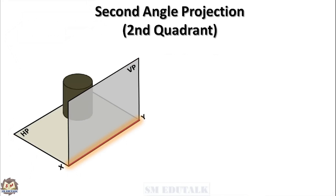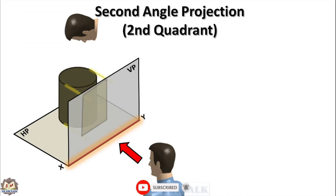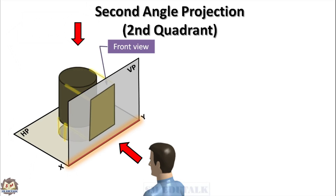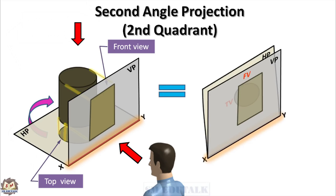In second angle projection, the object should be kept in the second quadrant. Here, the plane of projection lies between the observer and the object while viewing from the front, but the same condition cannot be maintained when the object is viewed from the top — so this is not a valid projection system for engineering drawing. In second angle projection, we get the front view in VP and the top view in HP. After rotating HP 90 degrees clockwise, it overlaps over VP, so both front view and top view come above the XY line, creating a confused, clumsy picture. That's why no one uses the second angle projection system.